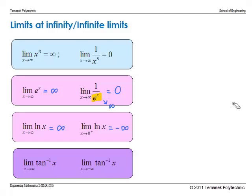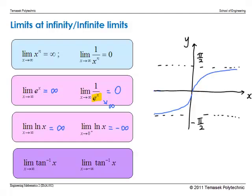Next, looking at the graph of arctan(x): as x → ∞, arctan(x) approaches the horizontal asymptote y = π/2. Therefore, the limit as x → ∞ of arctan(x) is π/2.